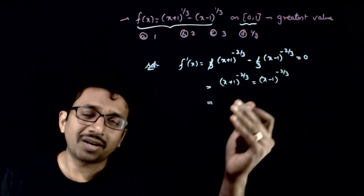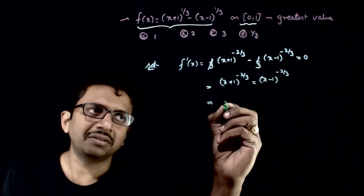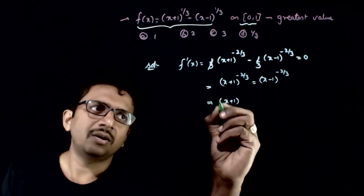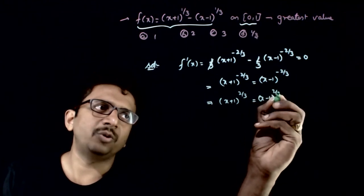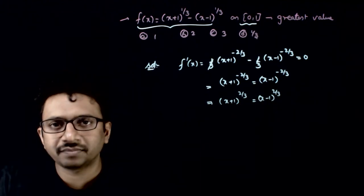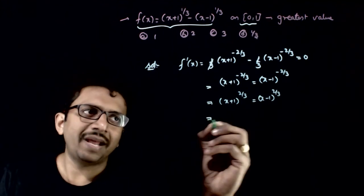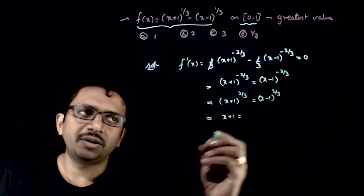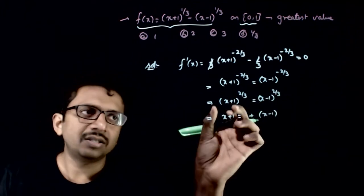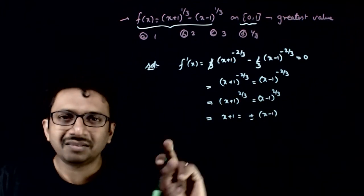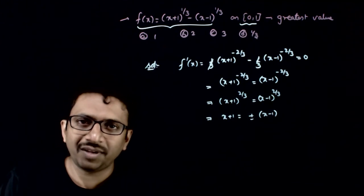This implies if I do the reciprocal and cross multiplication, x plus 1 whole power 2 by 3 is equal to x minus 1 whole power 2 by 3. This implies x plus 1 is equal to plus or minus of x minus 1, right? Because you have a whole square, so one of them can be the positive or negative of the other.